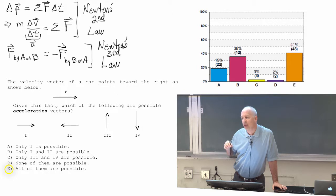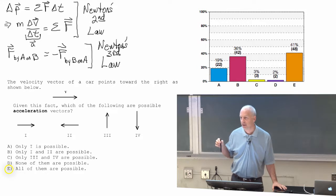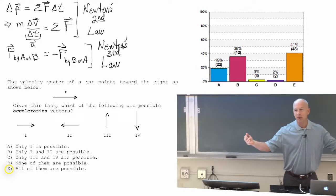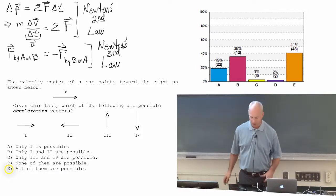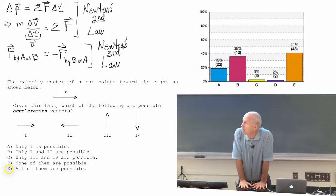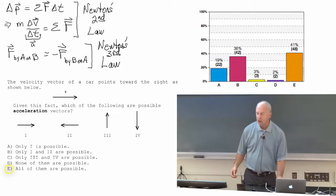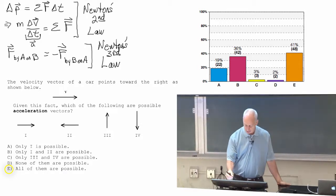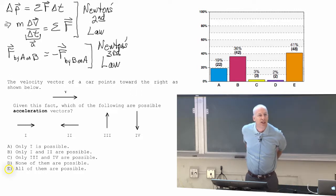Knowing the velocity at one point tells you zero about how it's changing. Knowing the energy of this table tells you nothing at all about how it's changing — maybe it's heating up because I'm putting my hands on it, maybe I've just thrown ice on it and it's cooling off. Knowing the physical property of some object, like its velocity vector, doesn't tell you how it's changing at all.